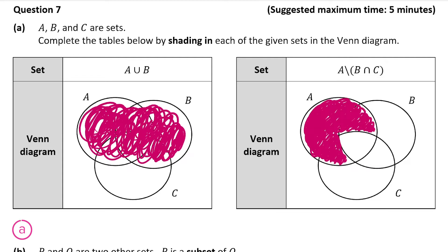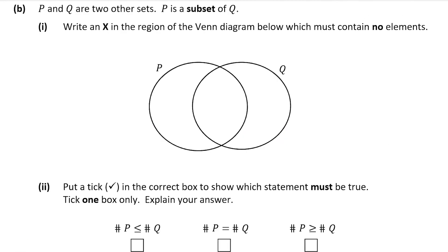Now we're moving on to part B. Part B tells us that P and Q are two other sets and that P is a subset of Q. A subset is a set of elements that are in some larger set, so basically everything in P will also be in Q. Part one asks us to write an X in the region of the Venn diagram which must contain no elements. Since everything in P is also in Q, there'll be nothing that's just in P — anything in P will also be in the overlap/intersection. So that's why I've marked that region with the X, which is what the question wanted.